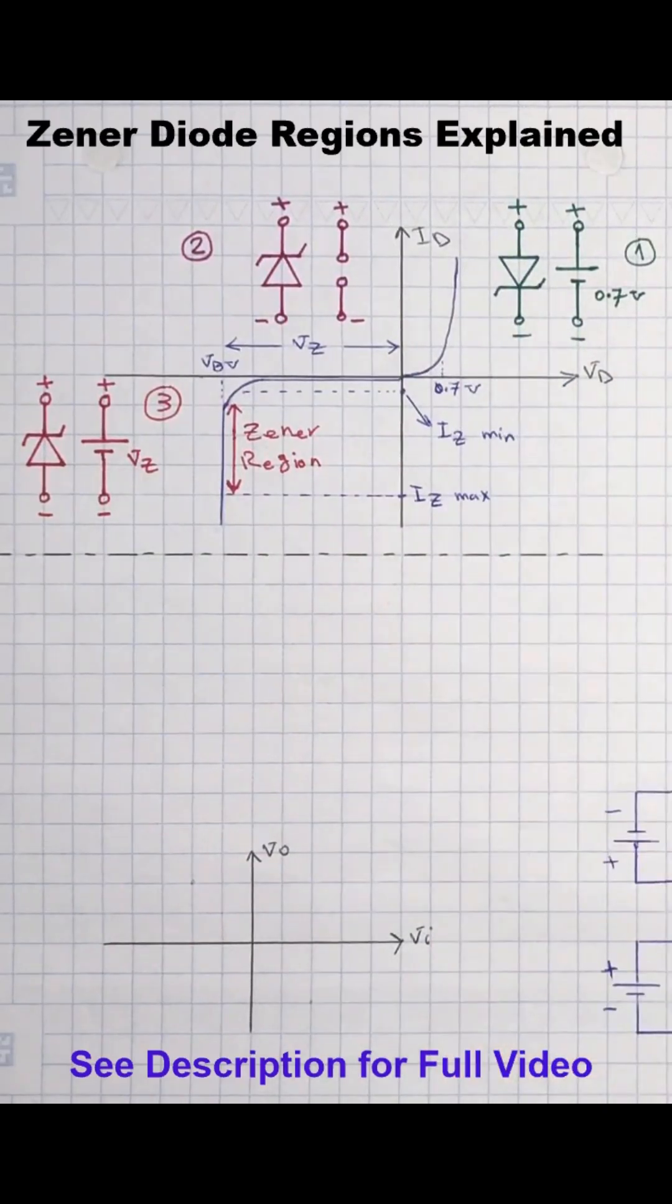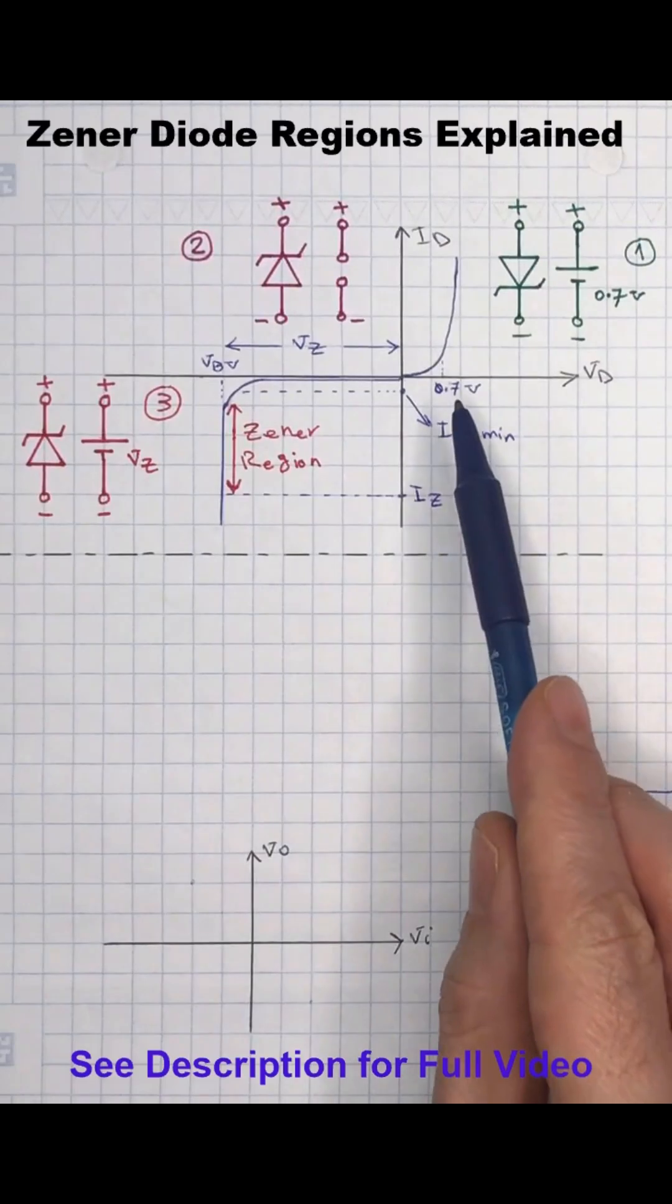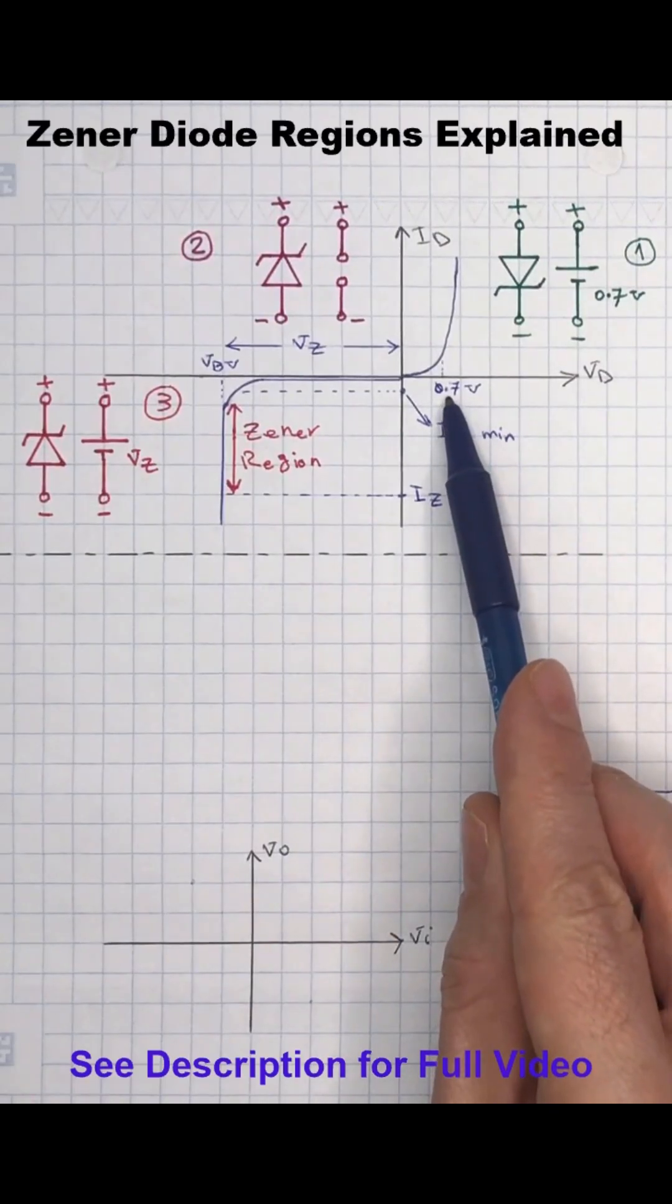Depending on the type of PN junction, the potential difference required to forward bias the Zener diode is around 0.7 volt for silicon PN type and is around 0.2 volt for germanium type PN junction. In this case we consider the silicon type.